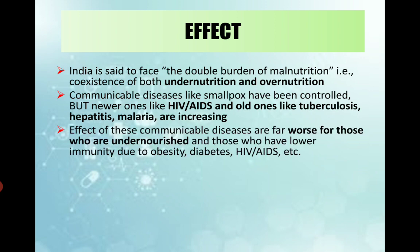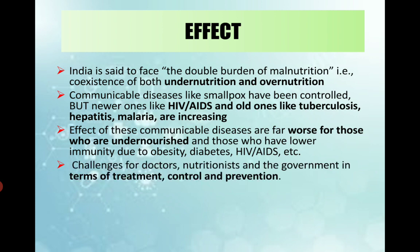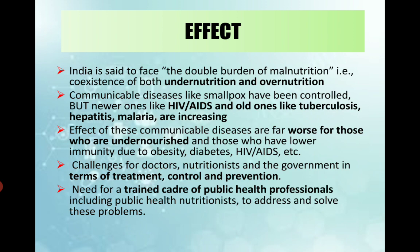The result is that because of these diseases, so many people are undernourished, malnourished, and have health issues. When they have lower immunity and are undernourished, all these diseases are going to be worse. Like corona is worse in people who have existing conditions of hypertension, diabetes, etc. This results in challenges for doctors, nutritionists and the government to treat, control and prevent disease. The need for trained public health professionals is increasing because the number of patients is more.